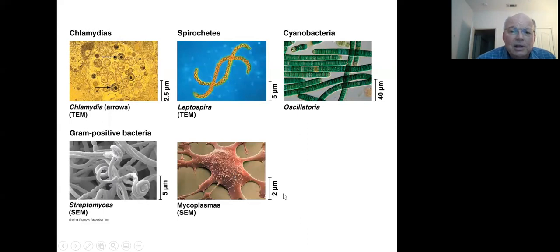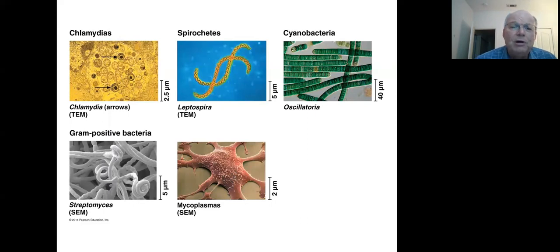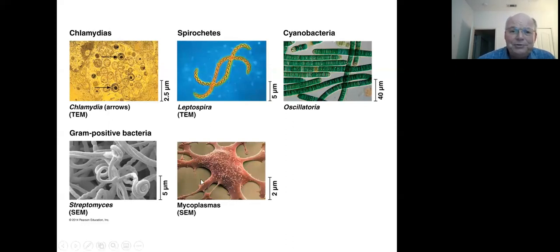Mycoplasmas — if you think the purple-stained thing is the mycoplasma, it's actually the little white spots. These are incredibly tiny cells with some of the smallest genomes known. They are also part of the study to find out the minimum number of genes necessary to maintain a functional cell.